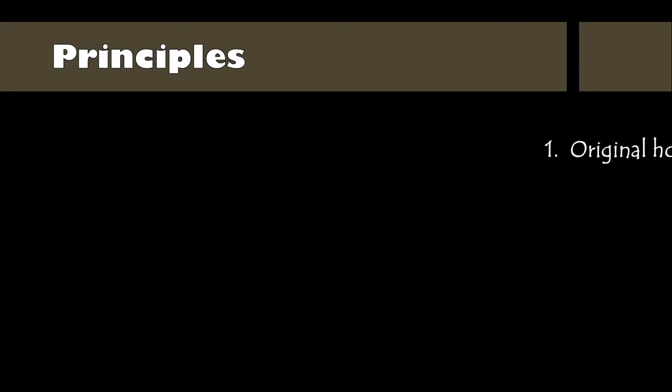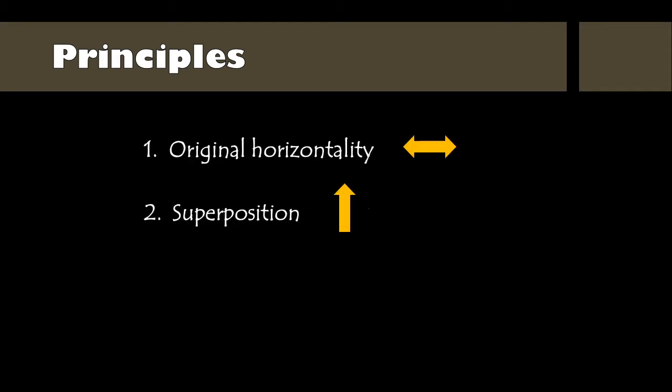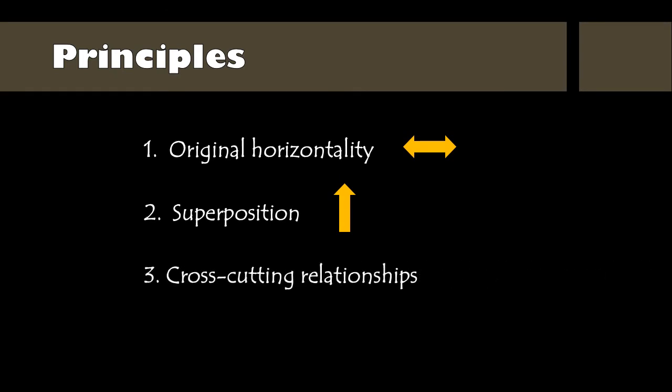There are several principles that determine how rock layers are formed. This presentation will introduce you to three of them: original horizontality, superposition, and cross-cutting relationships.